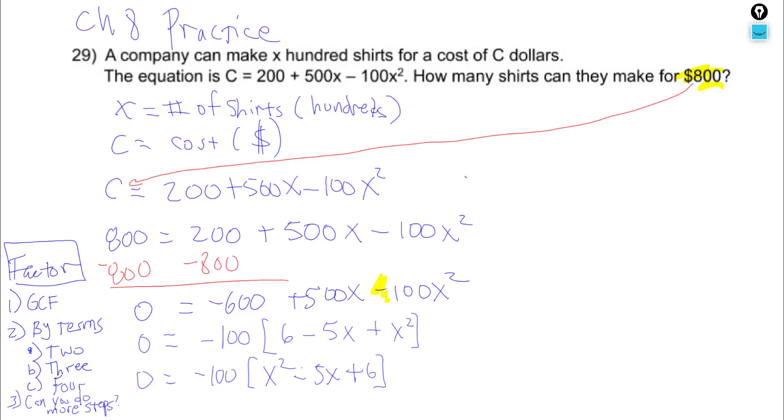Now, we still haven't broken down the second power. If you notice on the factoring strategy, can you do more steps? Factoring is many times not just one step. I did factor something important. I factored out the GCF. That was forward progress. But I have to keep factoring if I can.